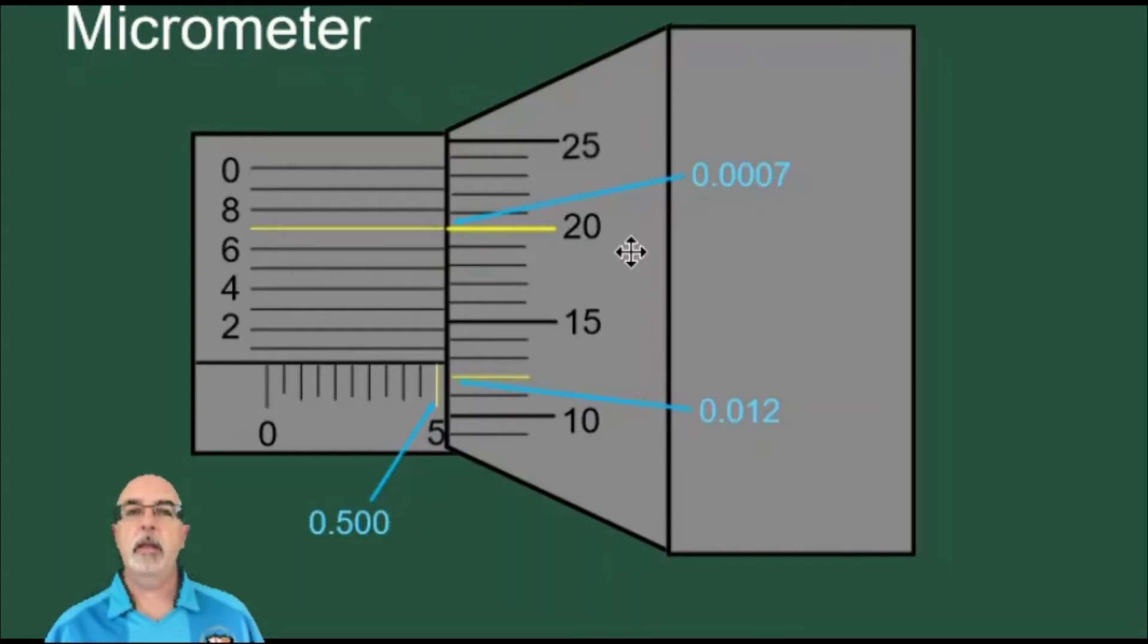The second scale we use is on the thimble and it has these horizontal lines. We can see readings for 10, 15, 20, and 25, and there are other numbers that we can't see because they are around the curve on the other side of the micrometer.